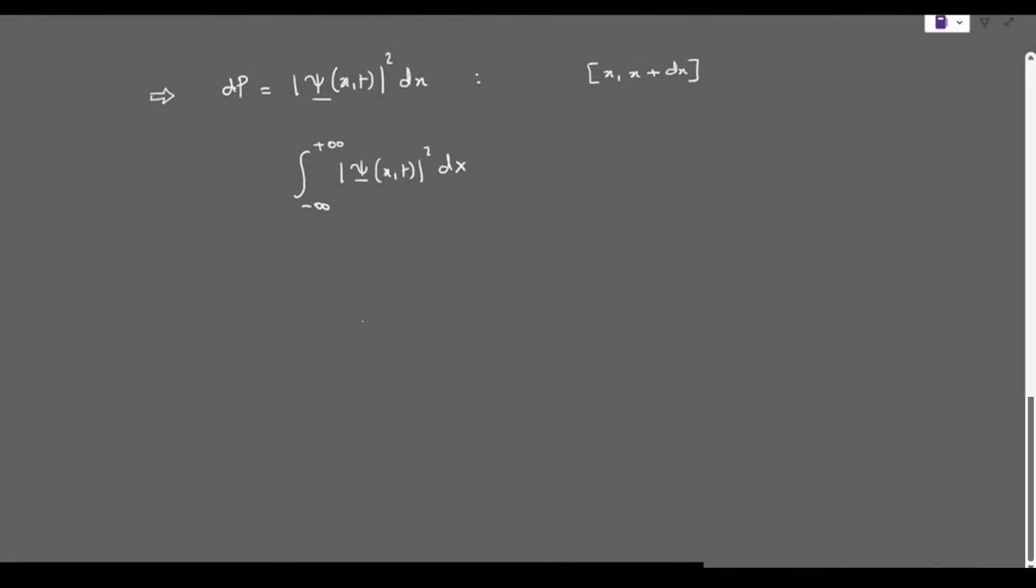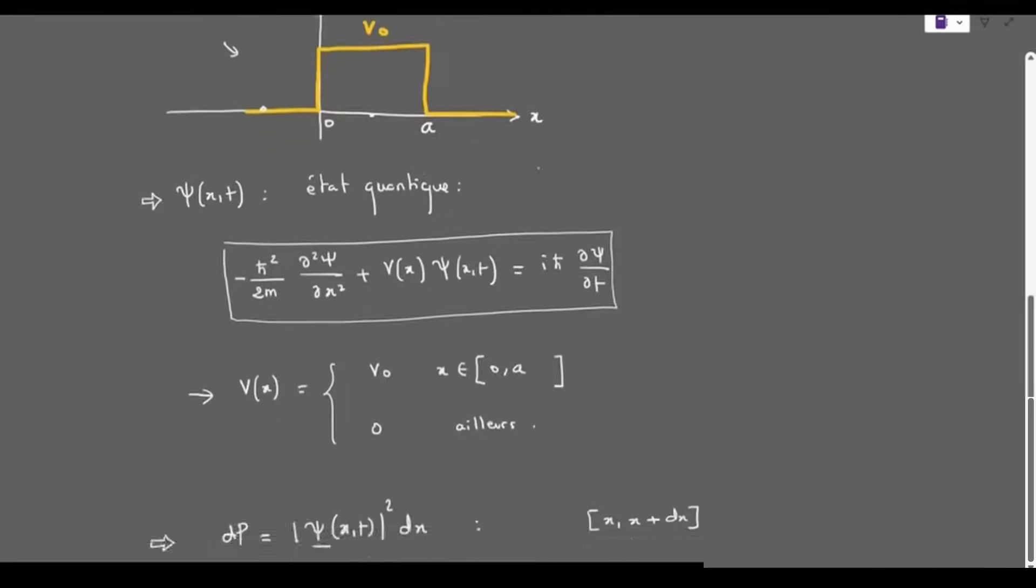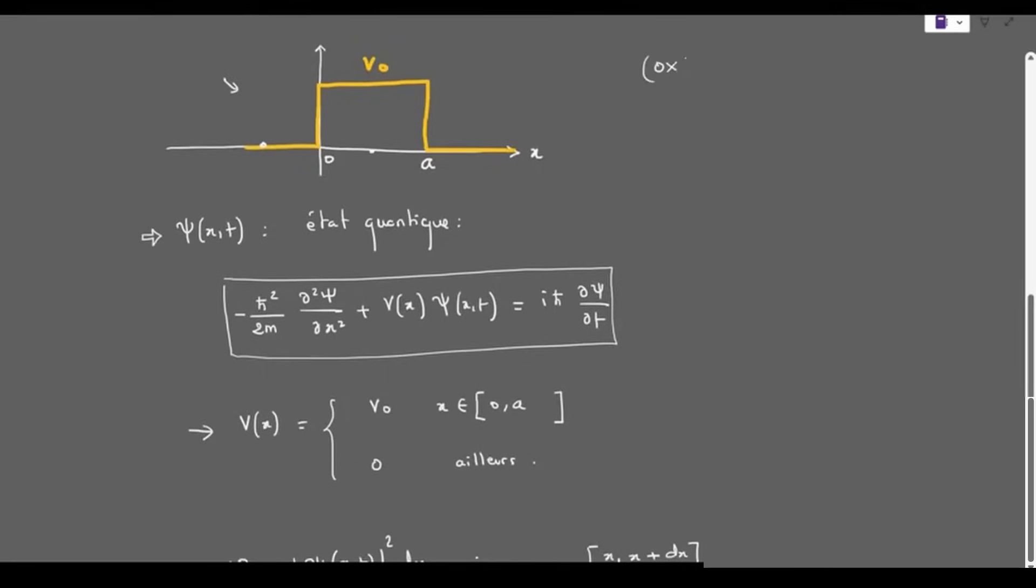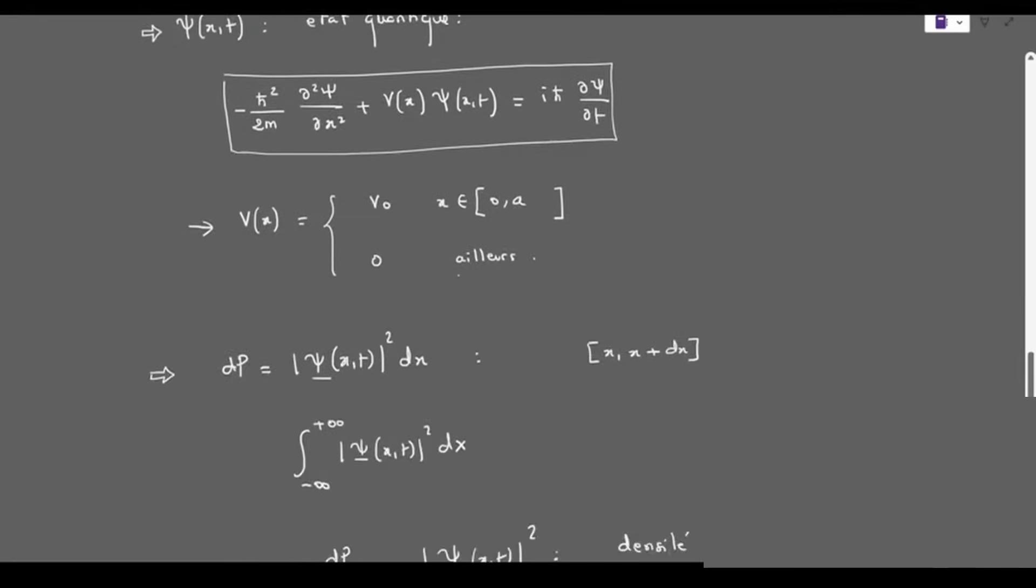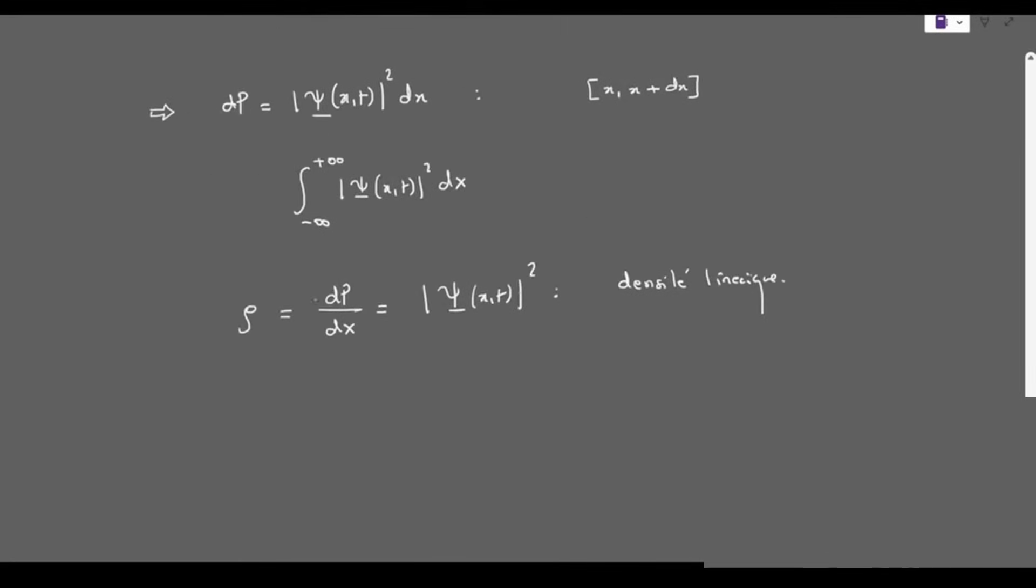One can also introduce ρ, which equals dP over dx, which equals |ψ(x,t)|². This corresponds to the linear density of probabilities. Here I emphasize linear since we are working in only one dimension, thus along the x-axis.